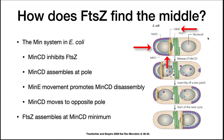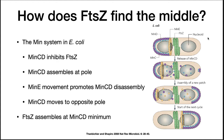MinE starts in the middle and works towards the pole. As the MinC/D proteins are depolymerized by MinE, the MinC/D proteins move to the opposite pole of the cell and polymerize there. When MinE reaches one pole, it reforms its ring at the edge of the polymerizing MinC/D at the other end of the cell. This causes a MinC/D minimum at the center of the cell. Since MinC/D is an inhibitor of FTSZ ring formation, the only place FTSZ can efficiently form a ring is in the center of the cell.